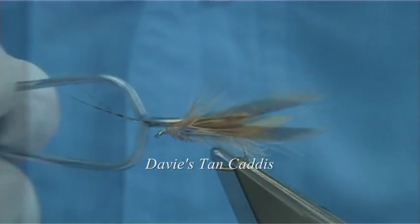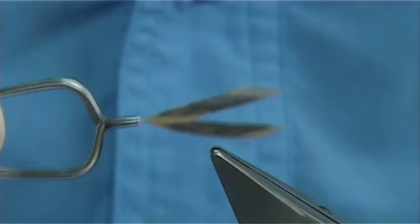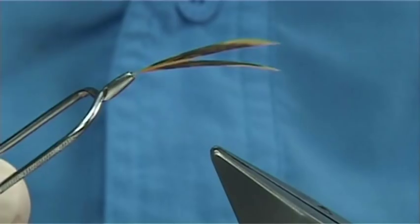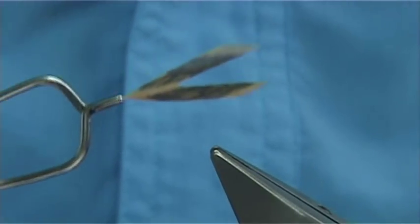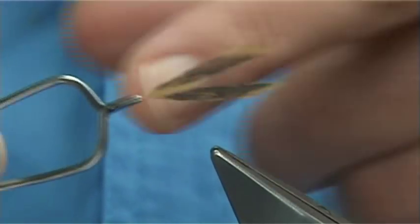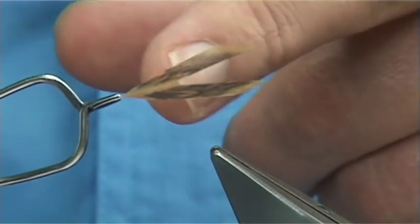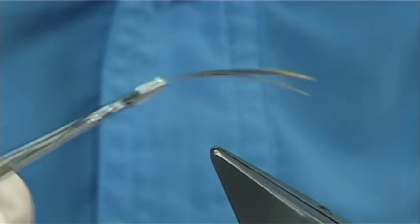I was actually going to the tackle shop looking for preformed caddis wings and I couldn't find any, so I've decided to make my own and this works out really well. I'm going to show you how I do it. This is just a hen pheasant and you can see I've taken away the fibers at the bottom, cut out the point of the hackle and formed a nice shape. I've used bug bond to do this and I'll show you how.